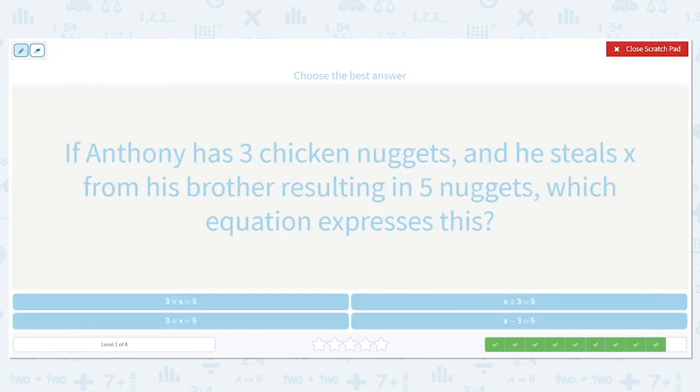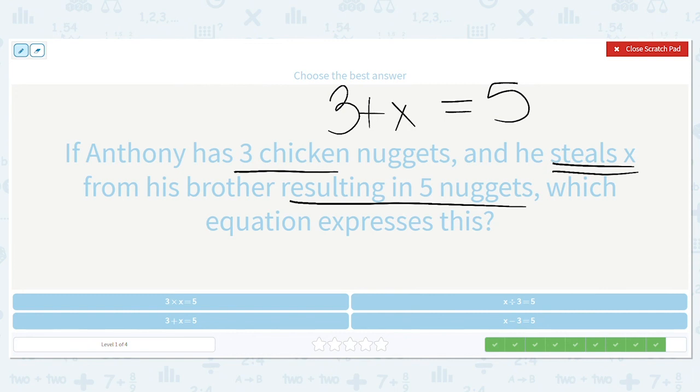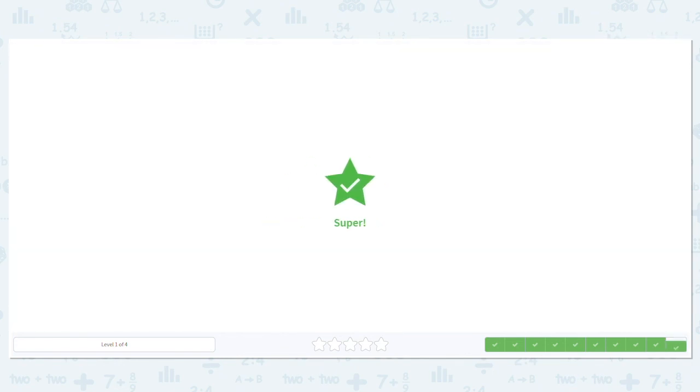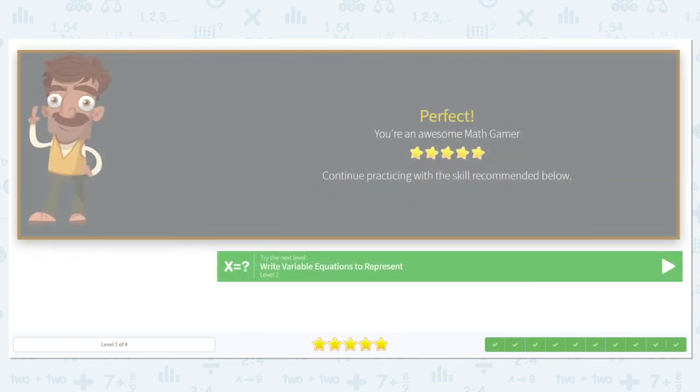Let's do one more. If Anthony has three chicken nuggets and he steals x from his brother resulting in five nuggets, which equation expresses this? When we say resulting, that means equals. So he has a total of five in the end. He started with how many? Three. If he's stealing, what is he doing? He's adding nuggets to his amount. So it's three plus x equals five. Great job with these equations!